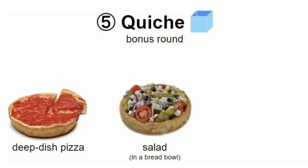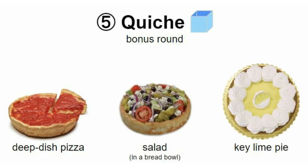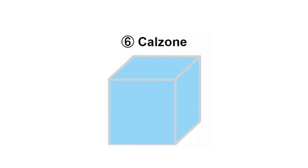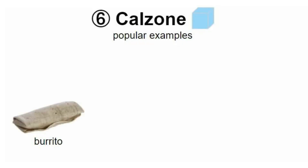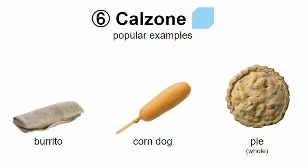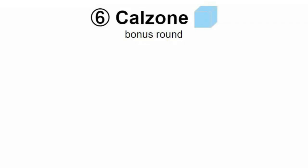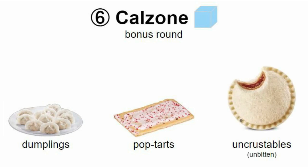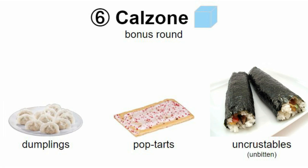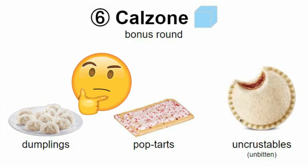There's a bonus round — three more examples: deep dish pizza, salad in a bread bowl, and key lime pie. Key lime pie is a quiche. Number six — calzone, where all six sides are surrounding the inside. A burrito is a calzone, a corndog is a calzone, a whole uncut pie is considered a calzone. Bonus round also includes dumplings, pop-tarts, and uncrustables. As soon as you bite into them they're considered tacos, or maybe sushi if you take two bites.